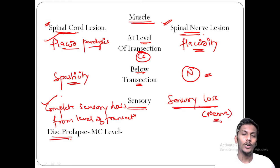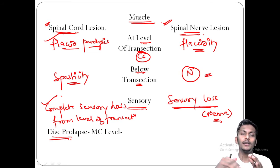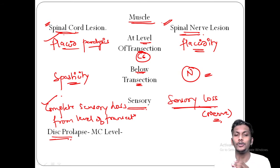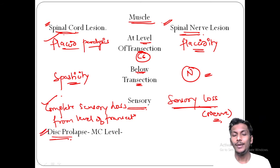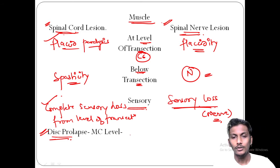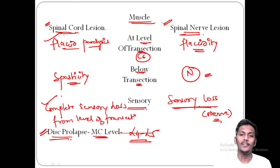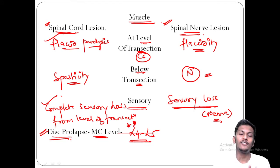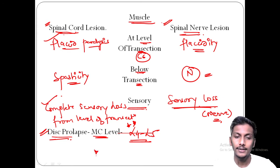In disc prolapse — translation of the intervertebral disc anteriorly or posteriorly — the most common level is L4-L5. Please remember this as an important one-liner. The most common level of disc prolapse is L4-L5.